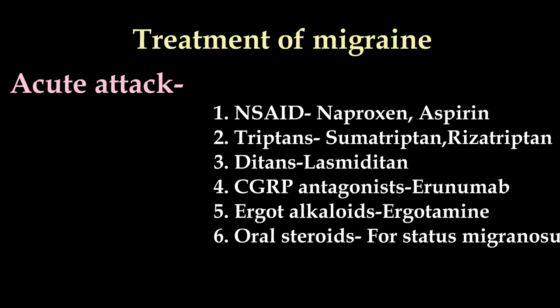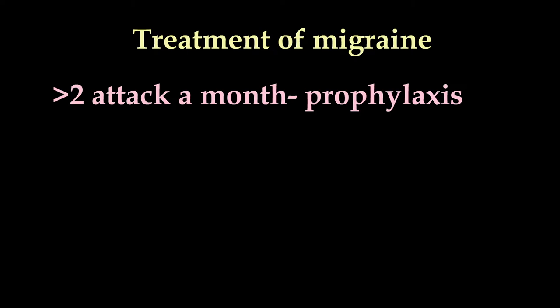Oral steroids can be given for intractable migraine and status migrainosus. If a person has more than 2 attacks of migraine a month, or there are dangerous symptoms like vertigo, weakness, or sensory disturbances with it, they are advised to take medication to prevent attacks.